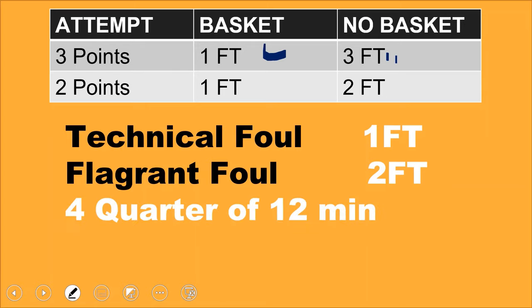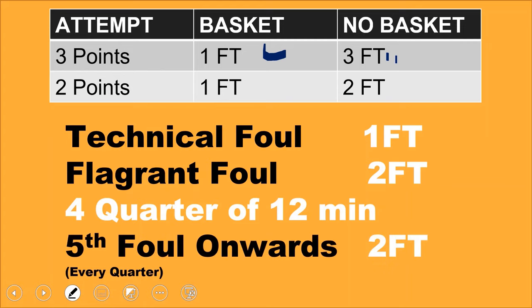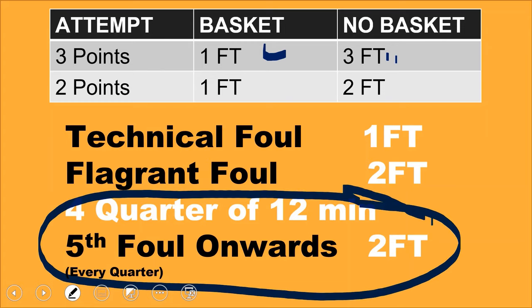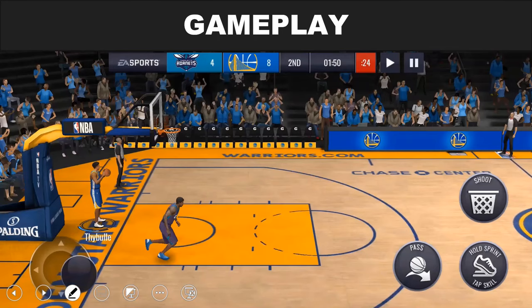Basketball is played in four quarters of 12 minutes each. In every quarter, four fouls are allowed by a team. If they commit a fifth foul, the opponent gets two free throws for every subsequent foul. Note: this rule can differ by league — this specific rule applies to the NBA.